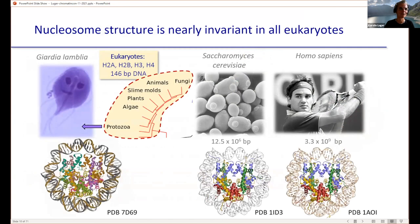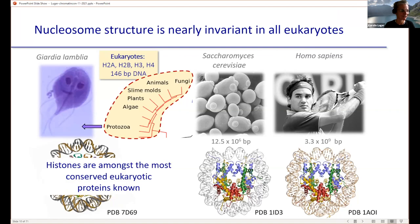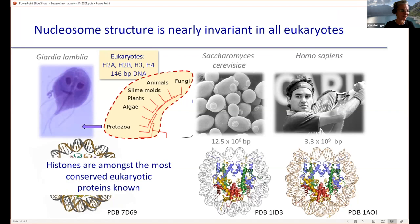Normally you would look at the eukaryotic evolutionary tree, examining different branches and less-derived eukaryotes like Giardia lamblia, looking at nucleosome structures to see how they evolved. But because histones are among the most conserved proteins known — after actin and cytochrome C — nucleosome structures are extremely conserved across all branches of the eukaryotic tree. So we can't really say how these things evolved, because they appear to be already perfect even in relatively primitive organisms.